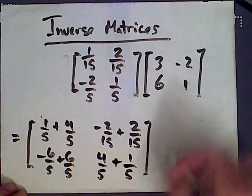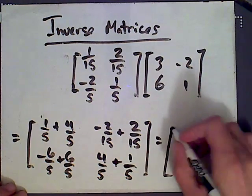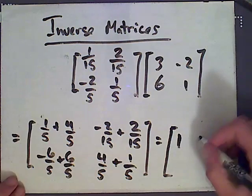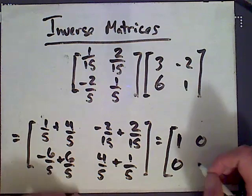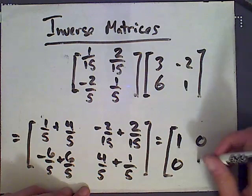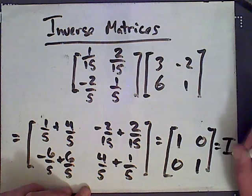And then again, adding these together we get 5/5 or 1, 0, -6 plus 6 gives us 0 here, and then 4 plus 1 is 5/5, which is 1. So again we get the identity matrix.